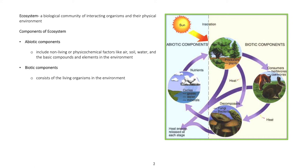Ecosystem: A biological community of interacting organisms and their physical environment. Components of ecosystem include abiotic components - non-living or physicochemical factors like air, soil, water, and the basic compounds and elements in the environment. Biotic components consist of the living organisms in the environment.